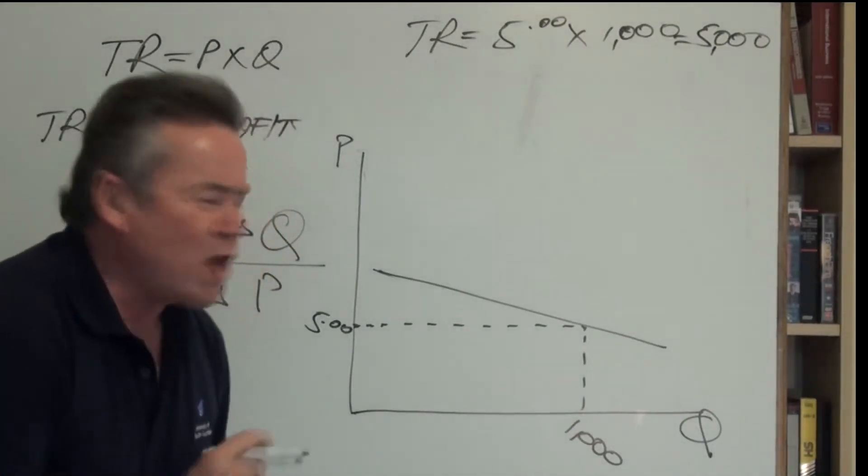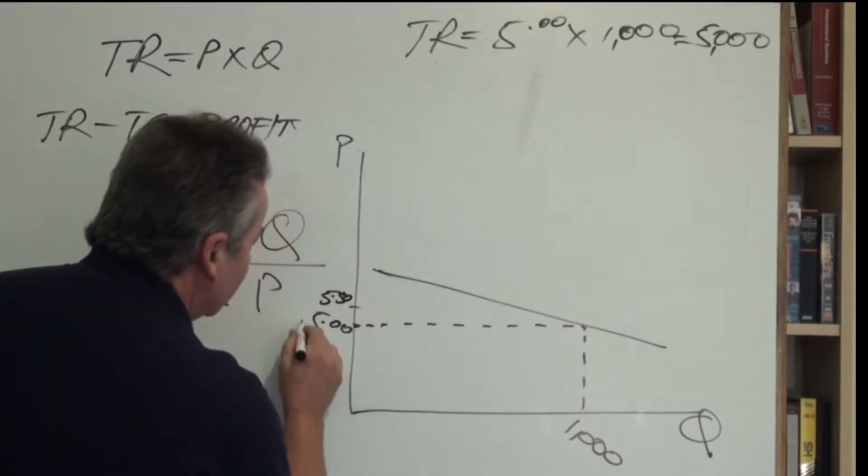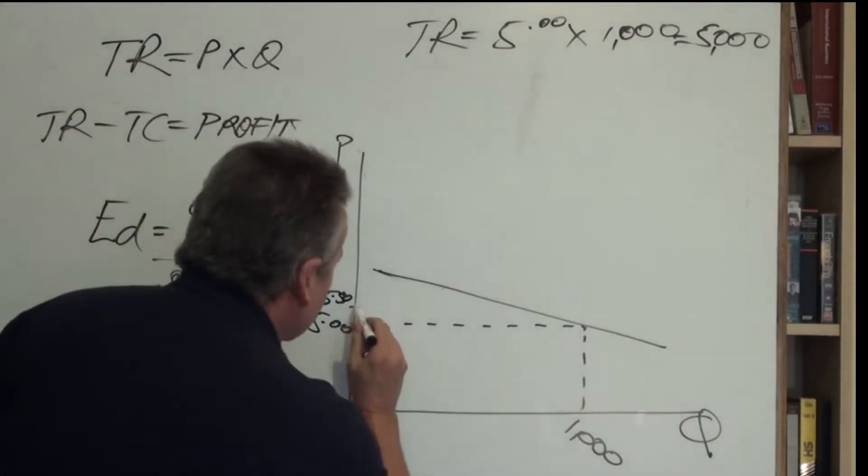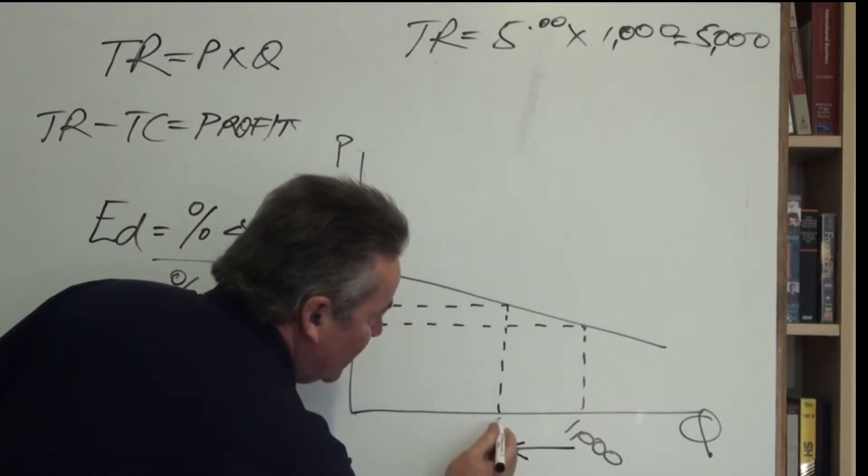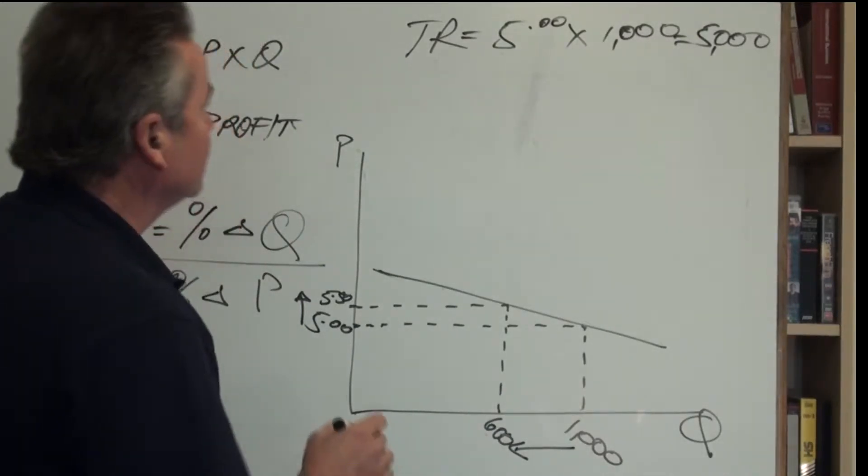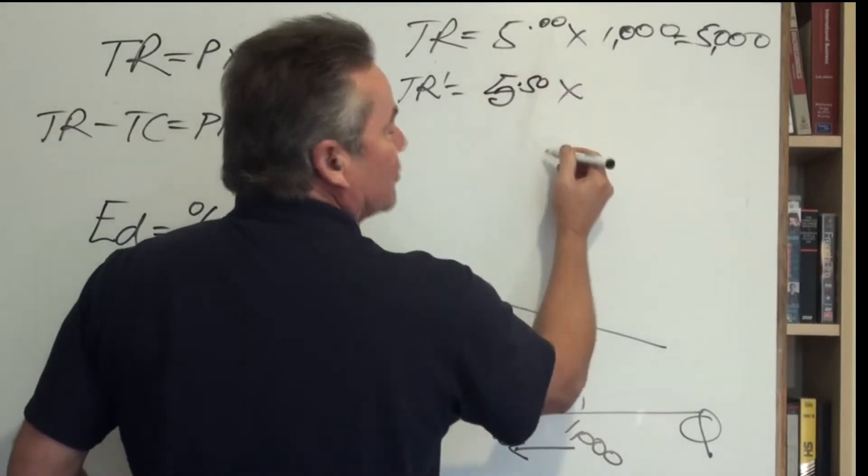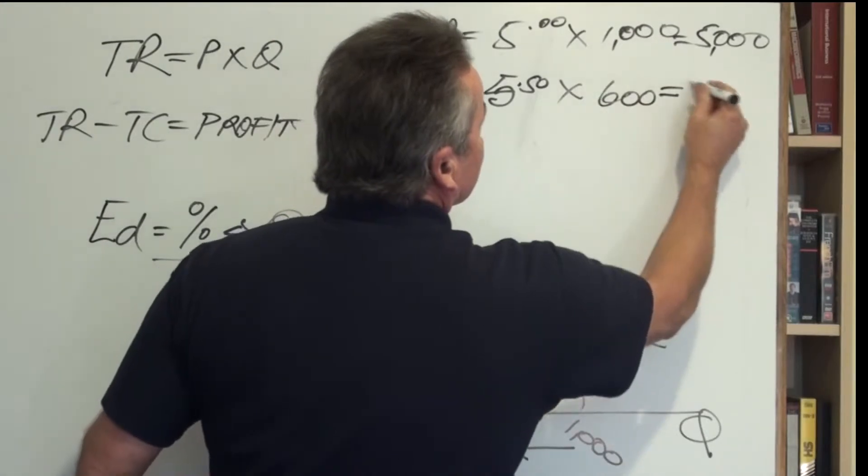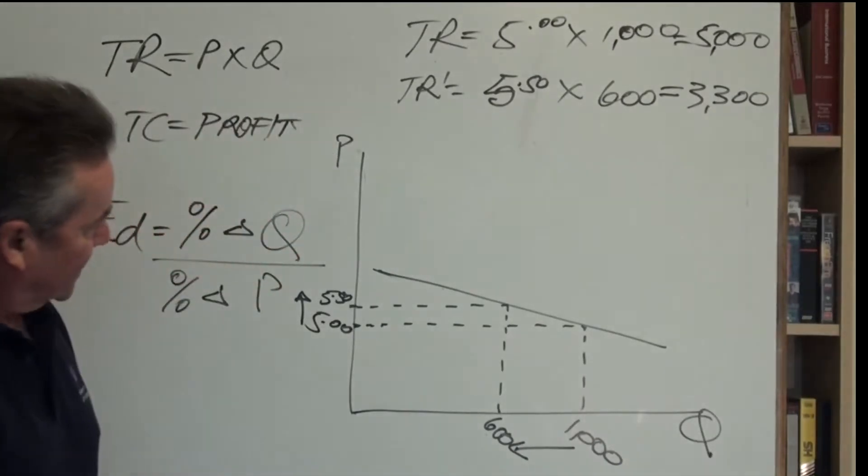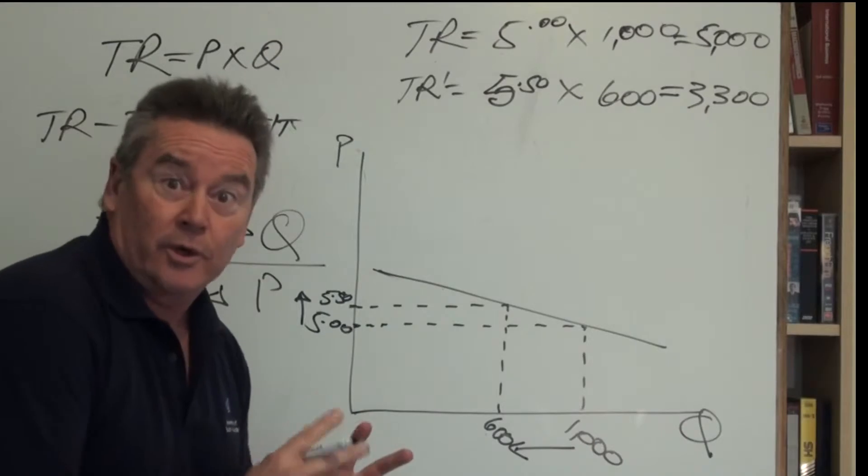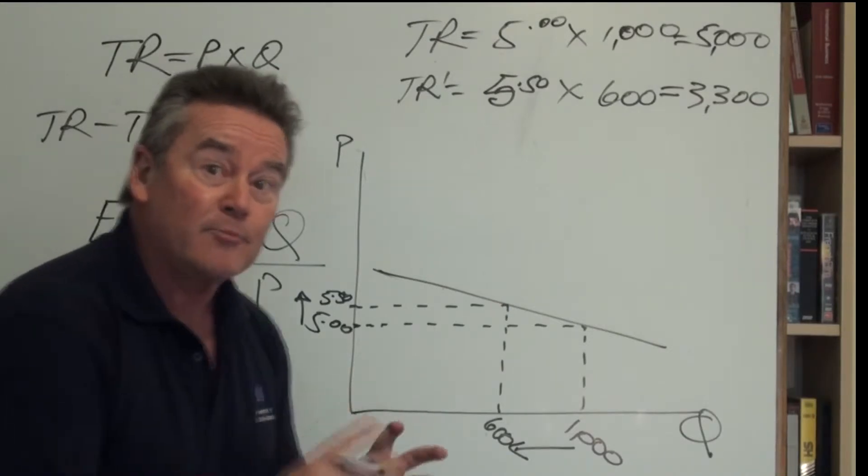Let's say you go ahead with this little price rise, say 50 cents, and you put the price up to $5.50. So let's do that, we'll put the price up to $5.50, and what do we find? We find that the quantity sold falls to 600. So what's happening now? Now we have $5.50 multiplied by 600. Well of course, we can see that total revenues actually fall. This is contrary to what you wanted to happen, but it's happened because the price elasticity of demand is highly price elastic.